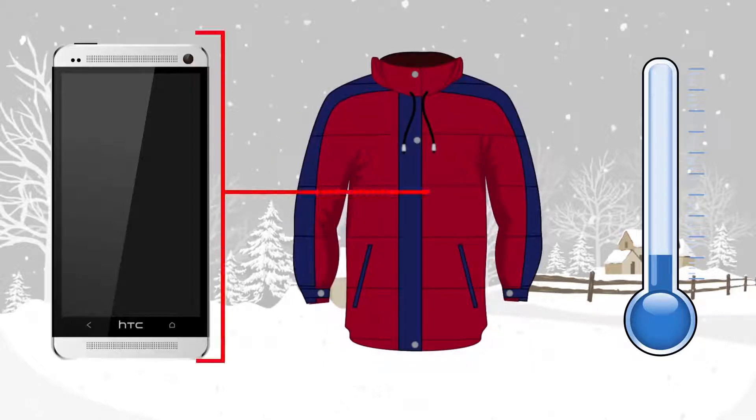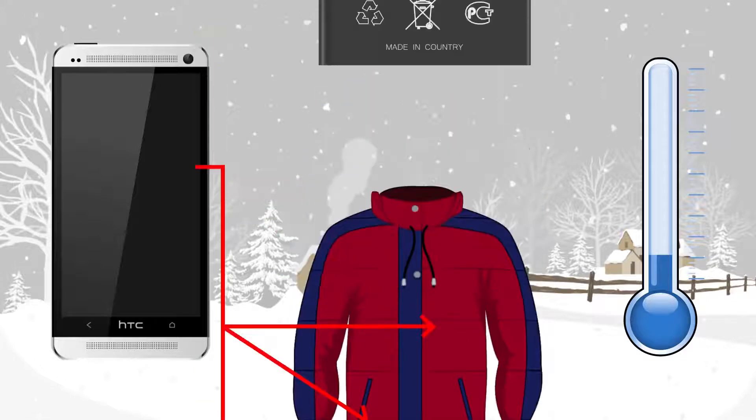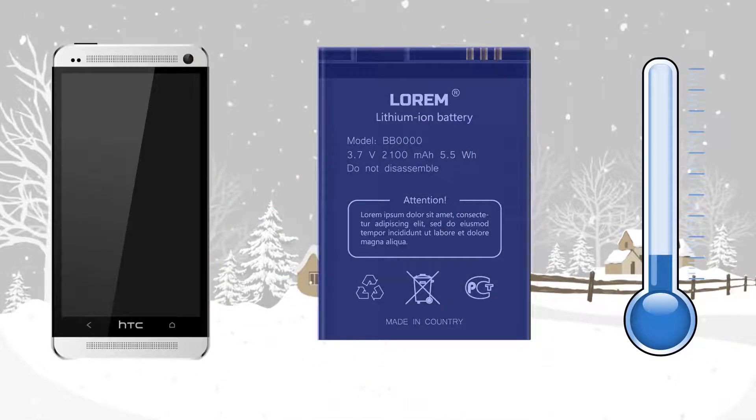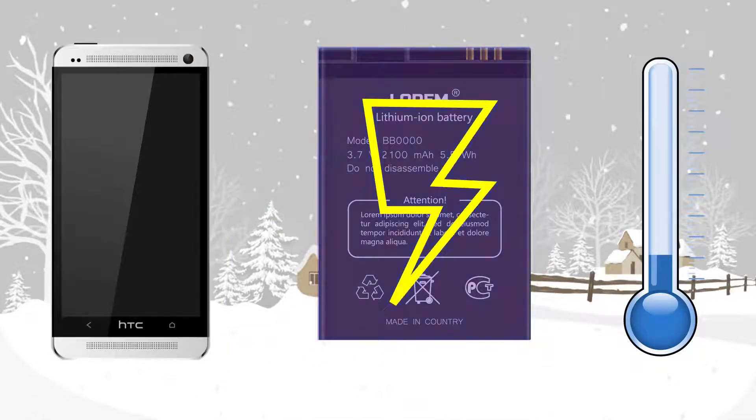So, if possible, carry the phone in an inner pocket of your coat or an outer pocket, but encased in a protective covering. Low temperatures are harmful to the battery because it needs more power to keep itself warm enough to function. That's why you may have noticed that batteries get drained much faster in cold weather.